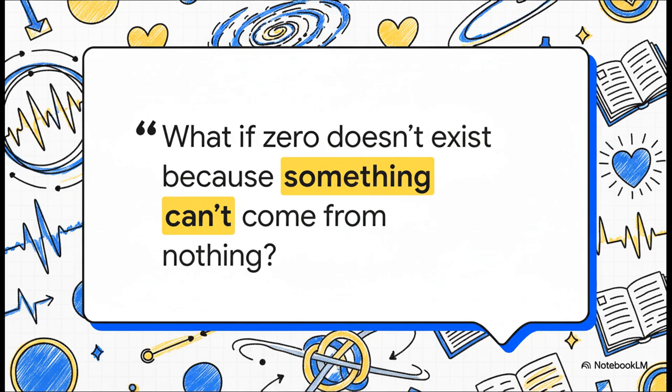It all started with this one question. A question that sparked this whole new theory called Dahan's looping motion. And believe it or not, it came from a simple chat between a researcher and his son. They were talking about how something can't come from nothing. And that led to this wild thought. Maybe, just maybe, the number zero has no business being in our physical reality.